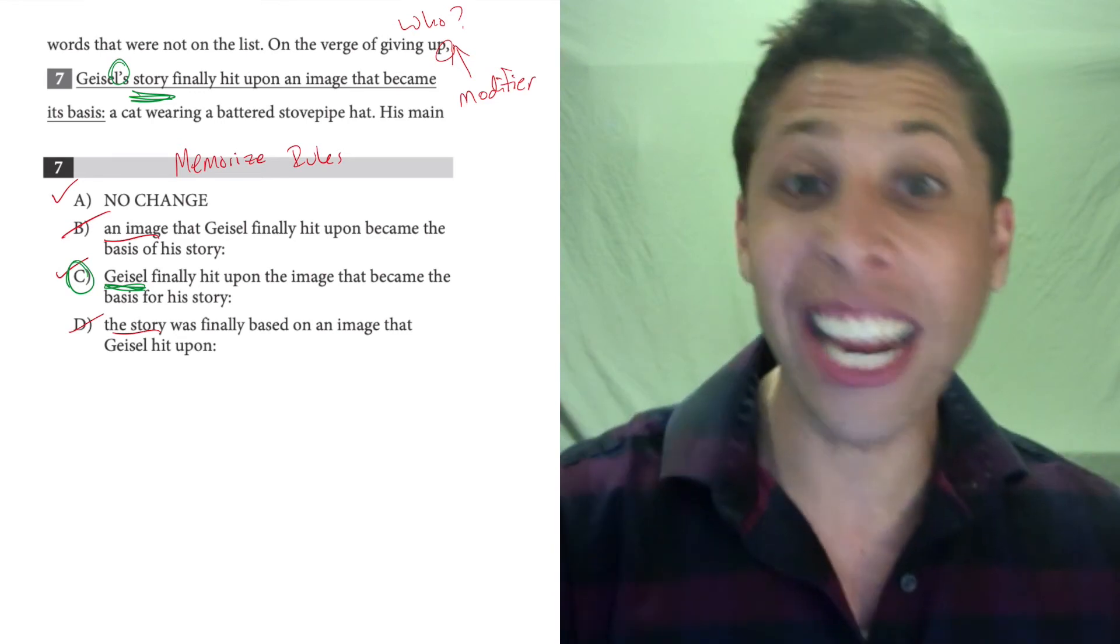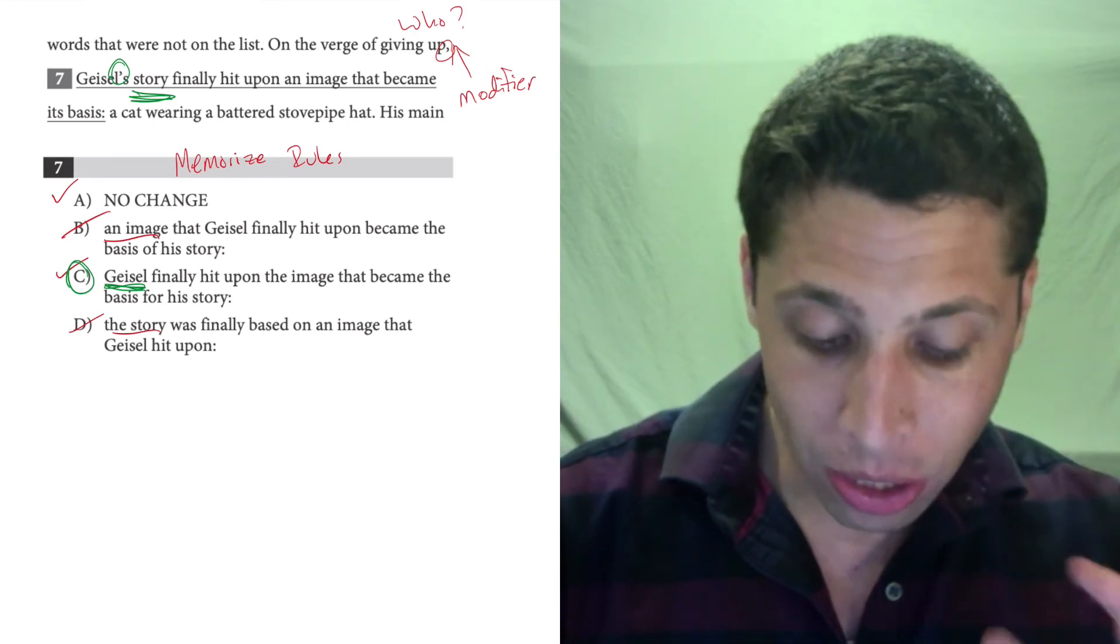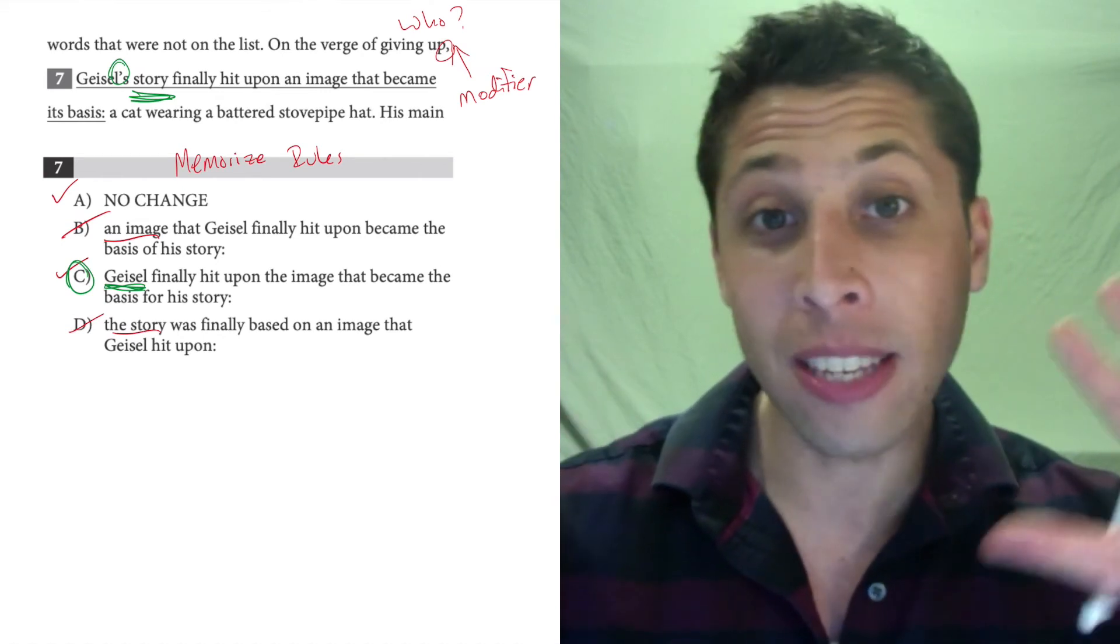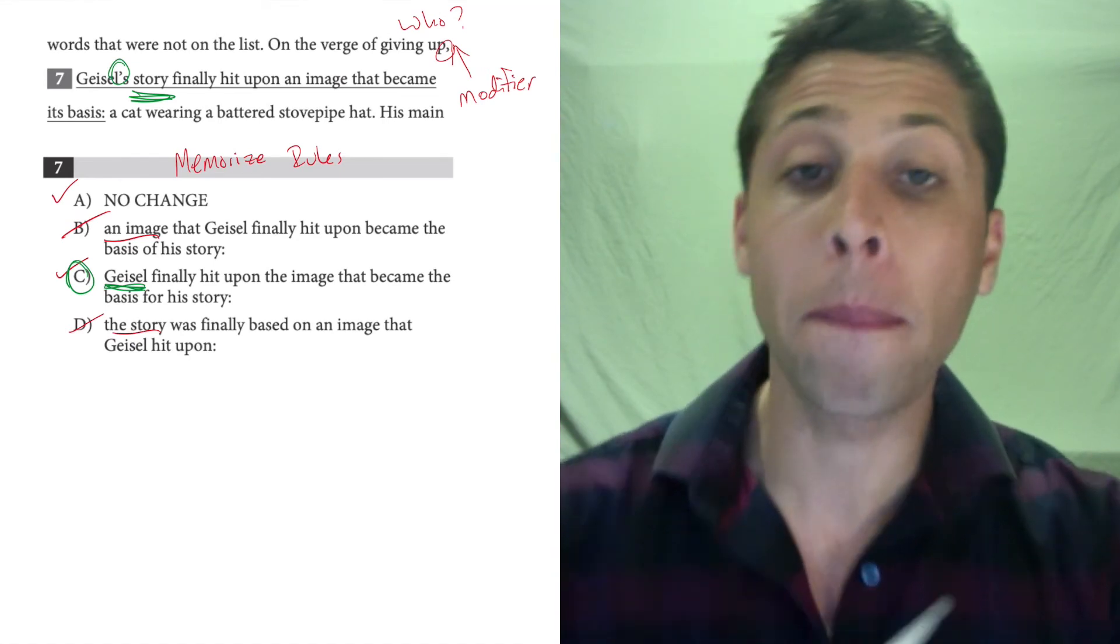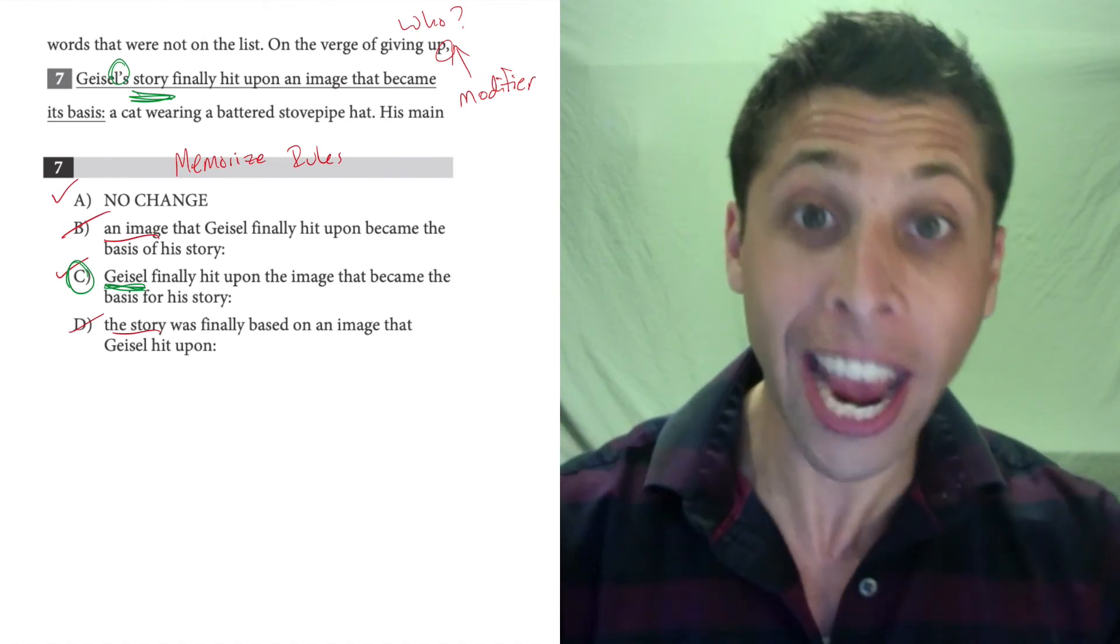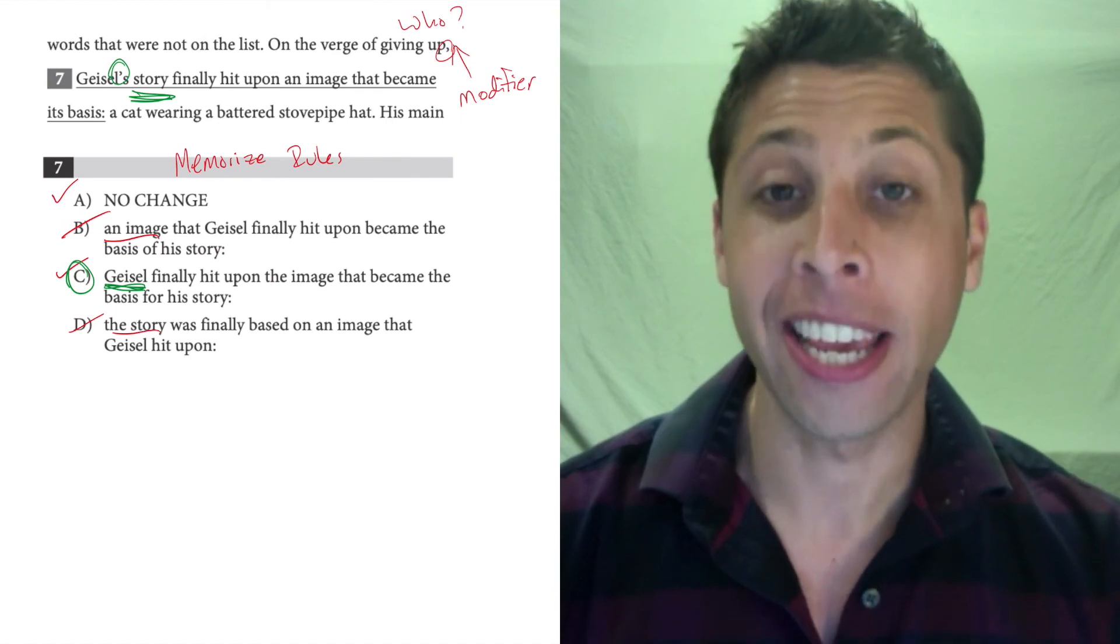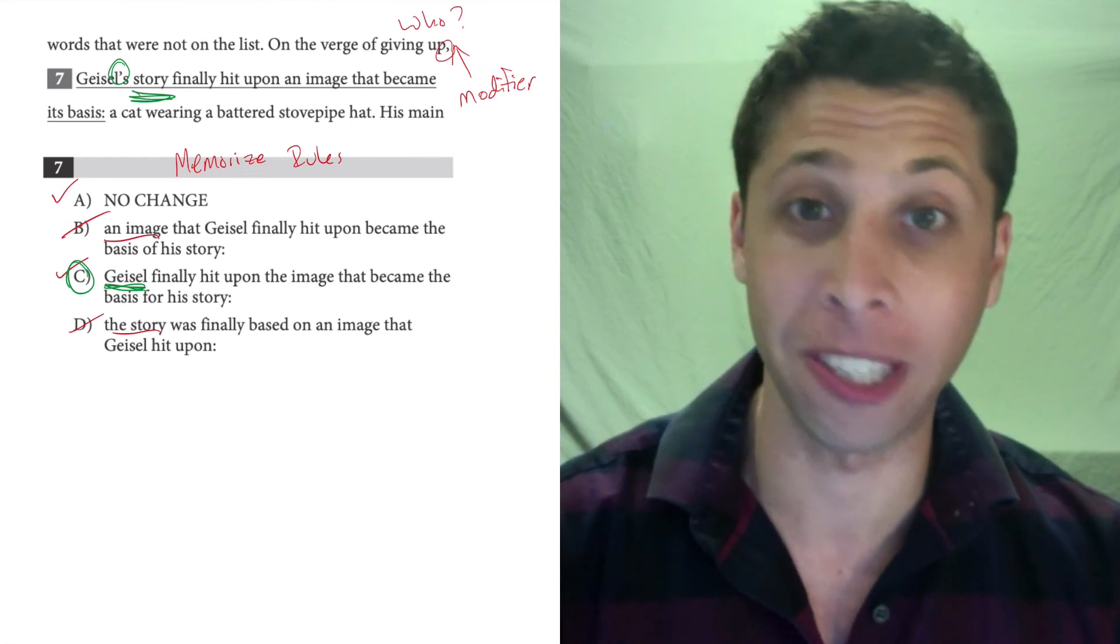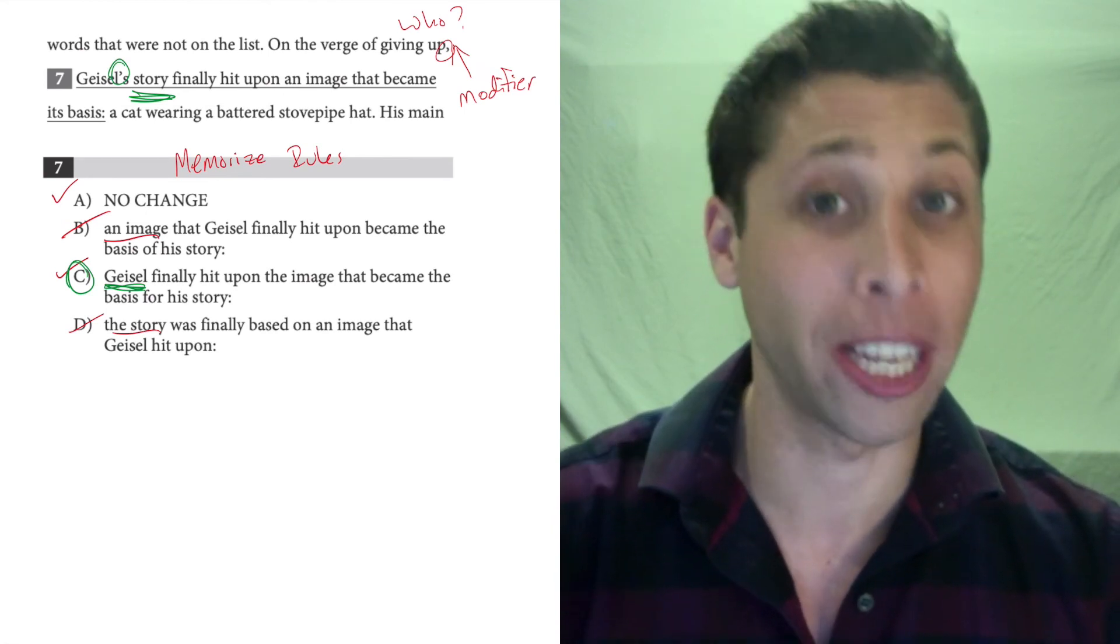So notice, we didn't even look at anything that came after that. We could read it just to be safe, but it's really just about the modifier rule turning something that seems like a style question, which choice sounds best, it turns it back into a grammar question where there's just simple little tests that we can apply to guarantee that we get the right answer. That's why memorizing rules is so important. It can make a lot of these weird questions really straightforward very quickly. You want to have formulas and rules that you apply. It makes this writing section much more like the math than the reading.